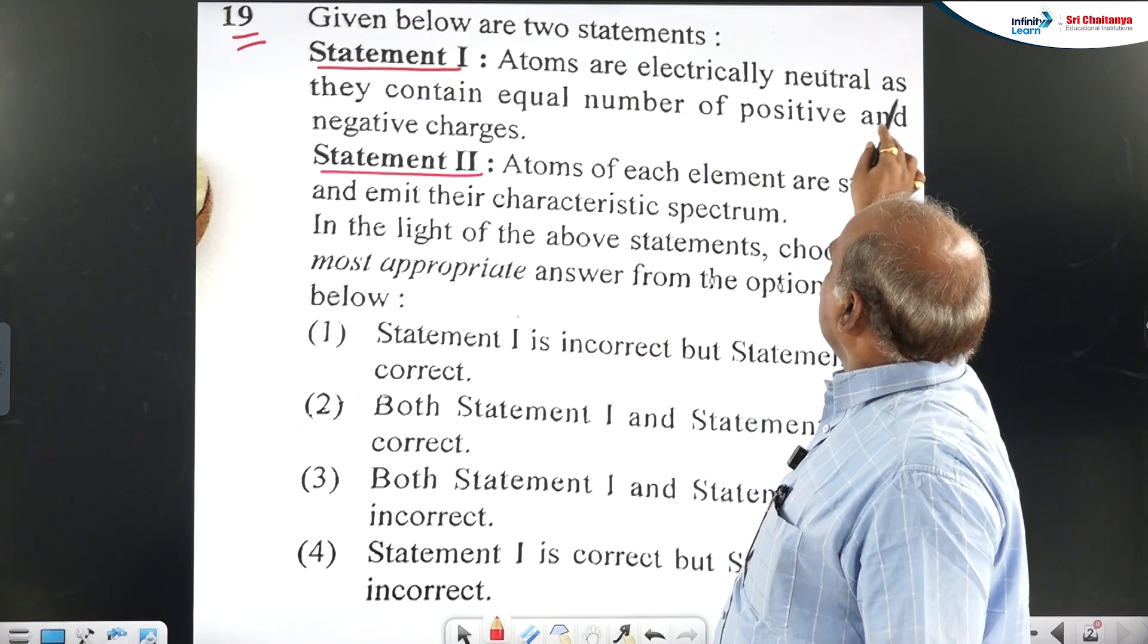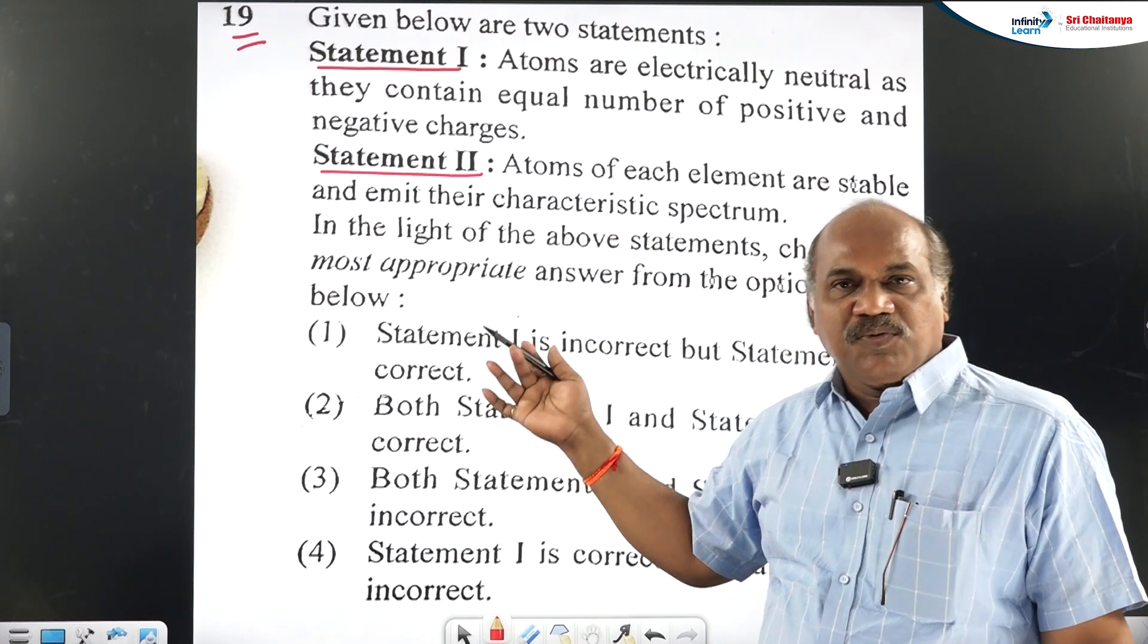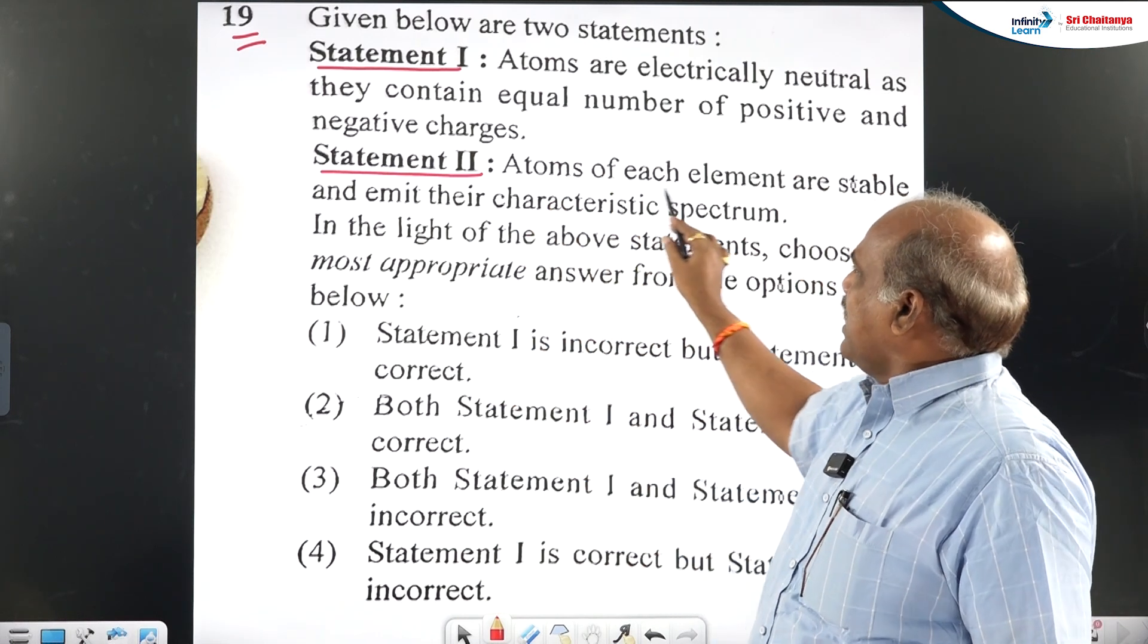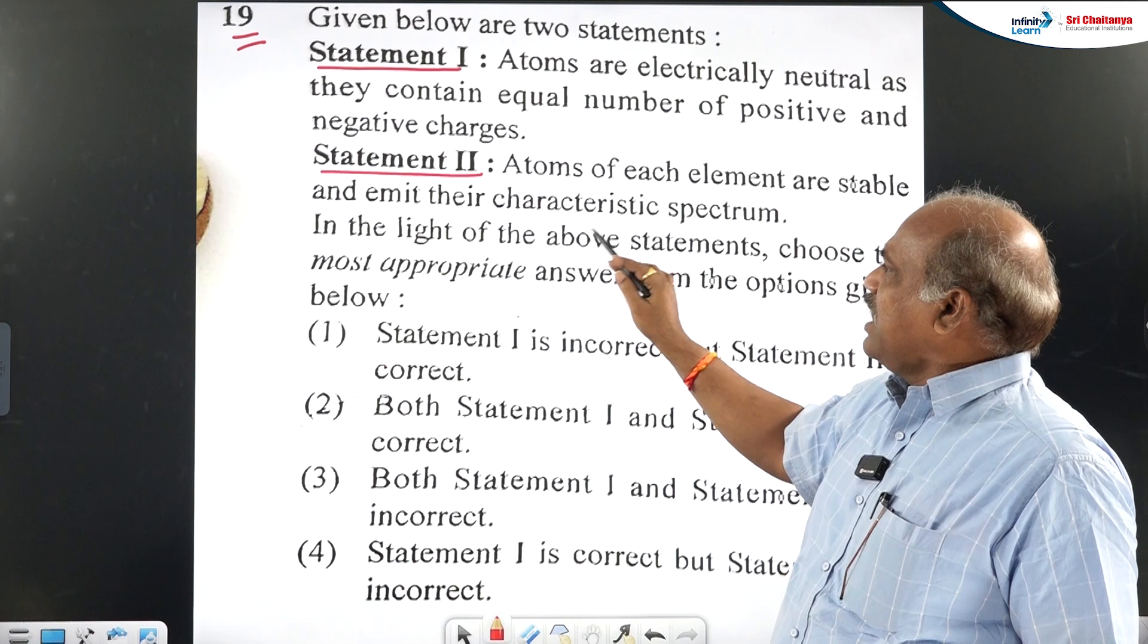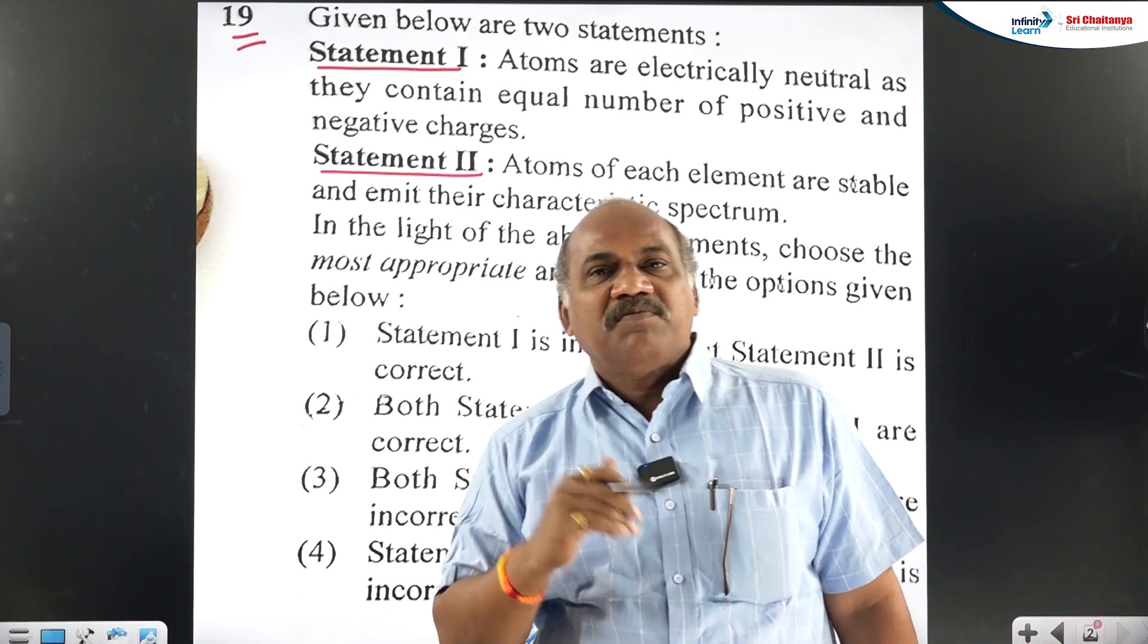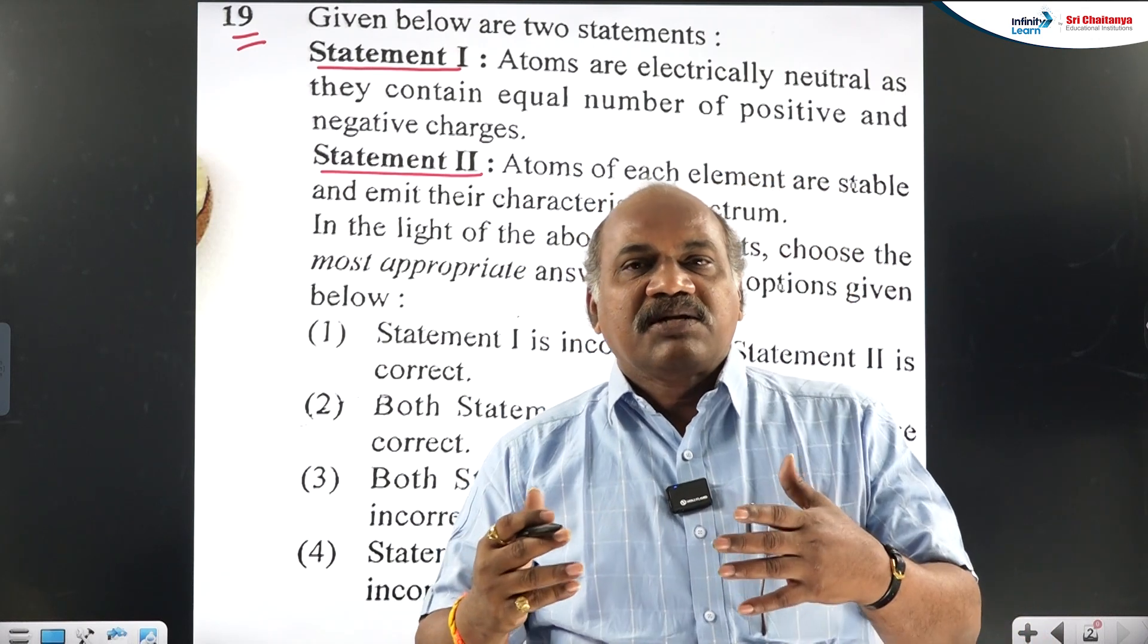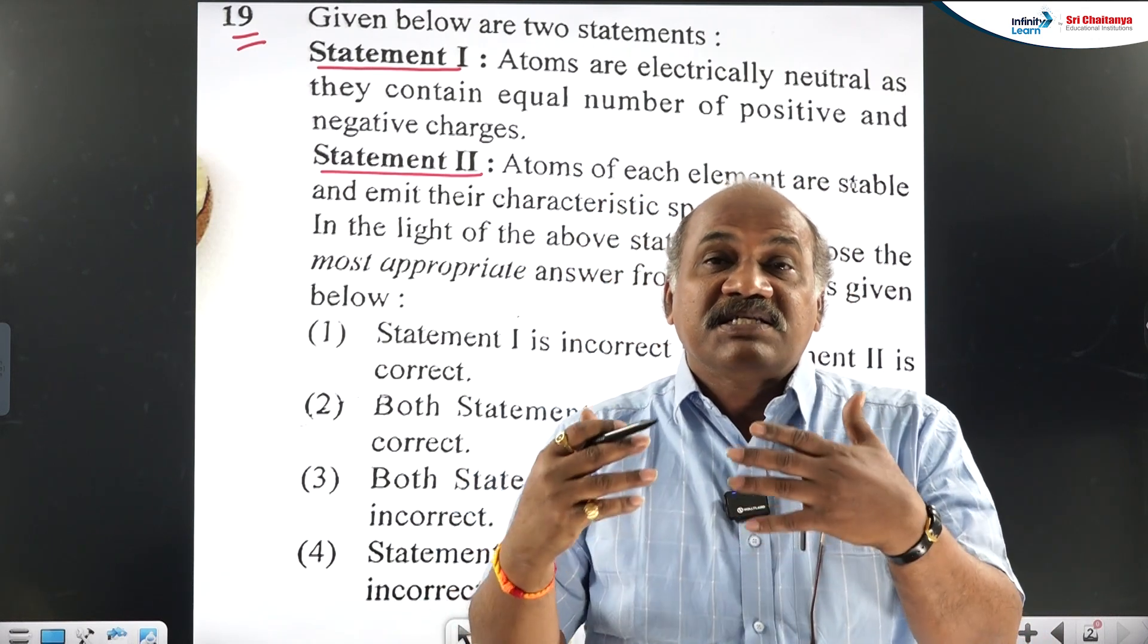Because, see, atoms are electrically neutral as they contain equal number of positive and negative charges. That is true. And here, atoms of each element are stable and they emit characteristic spectrum. Actually, Rutherford Model, that is based on planetary model, and we know that Rutherford Model failed to explain the stability of the atom.